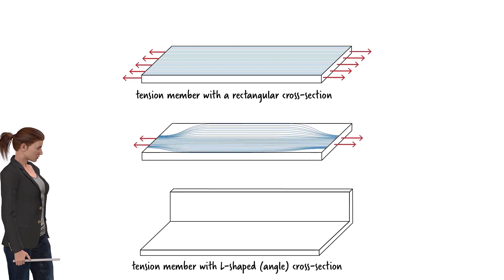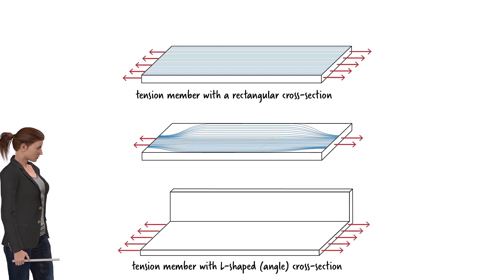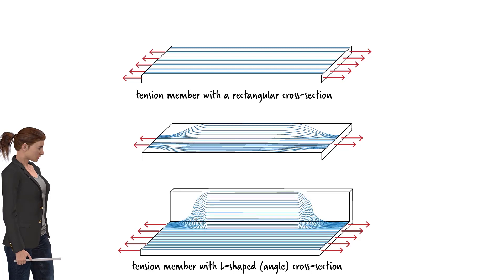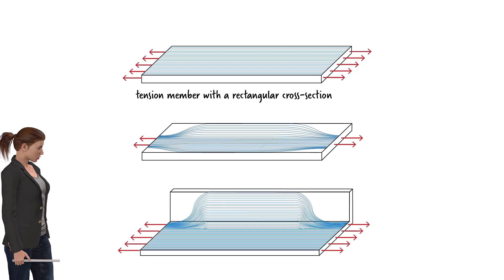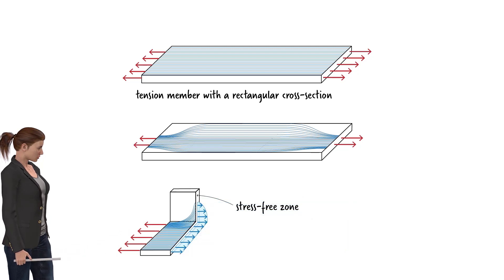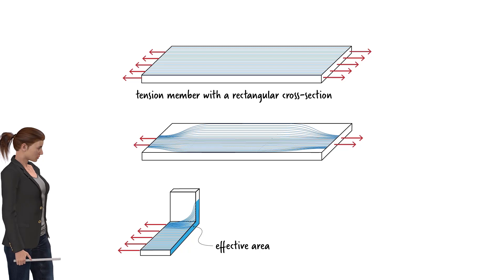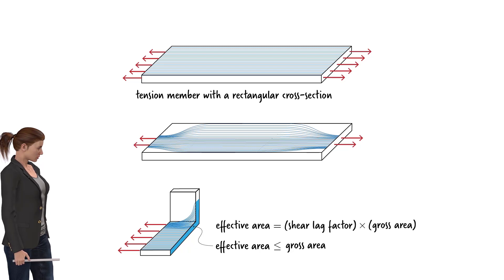Next, let us consider a tension member having an L-shaped cross-section. Assume the axial force is applied to one leg of the angle only. The outer regions of the unloaded leg of the angle are stress-free. If we cut the member near its midpoint, we get a uniform stress distribution. However, if we cut the member near the connection, part of the cross-section is stress-free, so the effective area is less than the gross area. The effective area is always less than or equal to the gross area — it equals the gross area times the shear lag factor U, where U is less than or equal to 1.